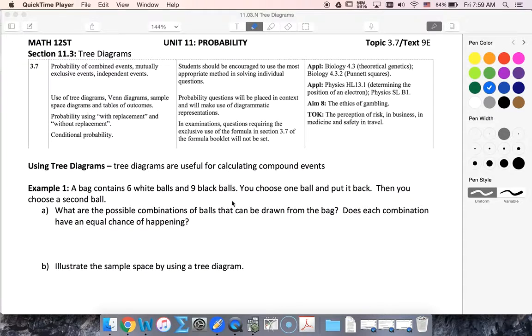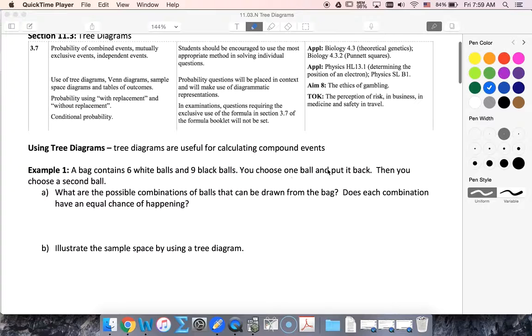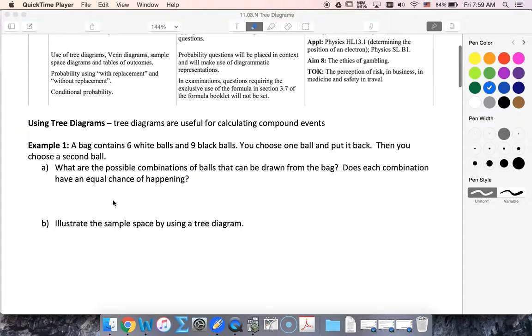So if I have my trusty bag with six white and nine black, I'd take a ball and look at it and put it back and then choose a second. So our possible combinations could be that we get white and white, we could get white then black, black then white, or black then black.